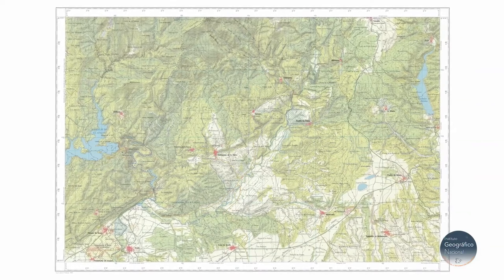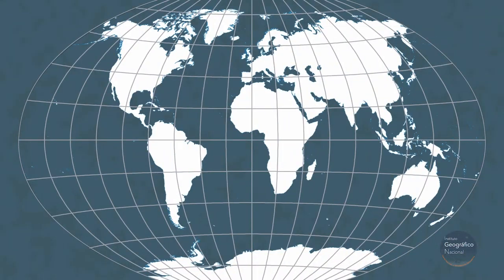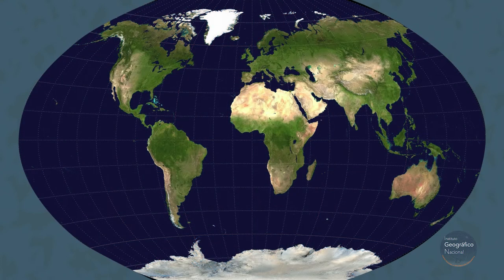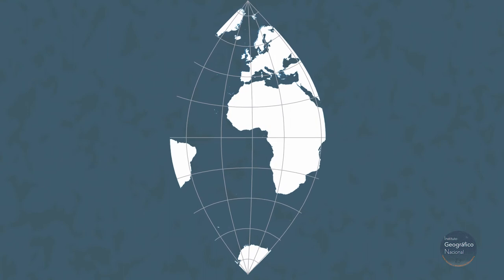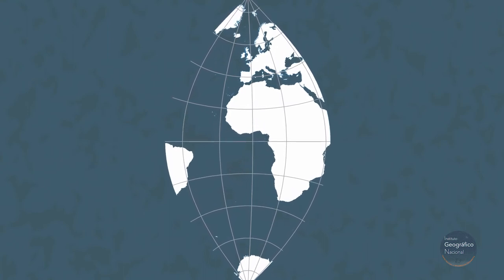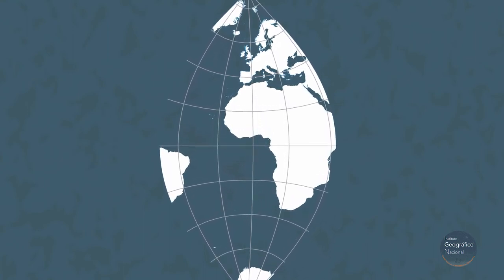In short, the perfect map does not exist. Maps representing the whole Earth produce more deformations, although some cartographic projections deform reality as a whole as little as possible. This happens, for example, in the Winkel tripel projection. In maps depicting a small portion of territory instead of the whole world, the tangent paper is closer to the ellipsoid, so the deformation of the map is smaller.